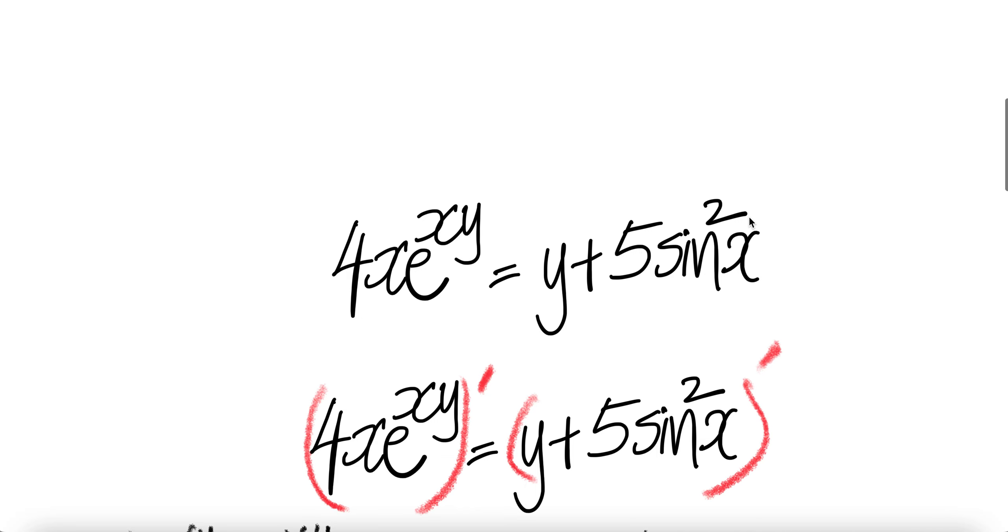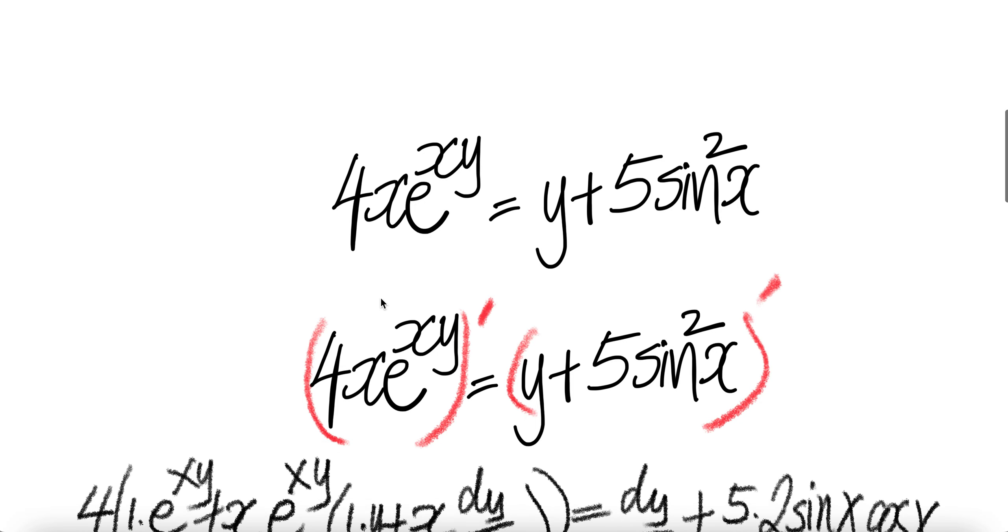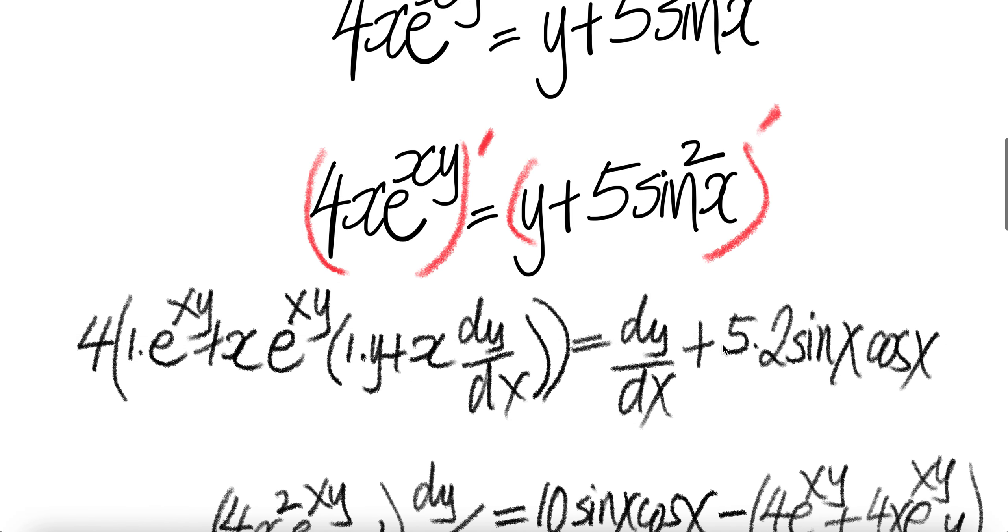Here, take the derivative on the left and derivative on the right. For the left side, the constant 4 comes out. Then you have the derivative of this, which is a product of two functions. One function is x, the second function is e to the power xy. To get the derivative of a product of two functions, apply the product rule.